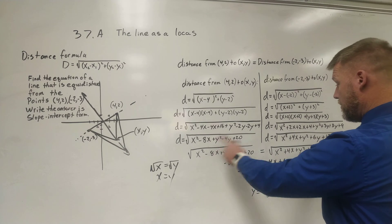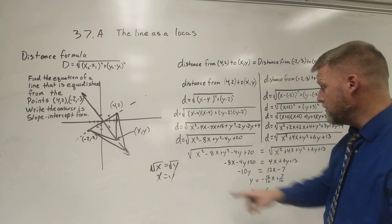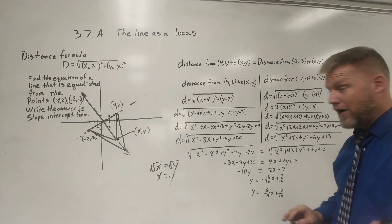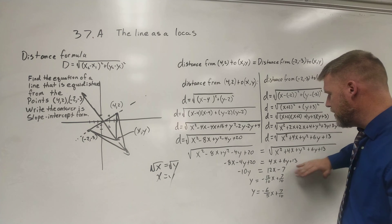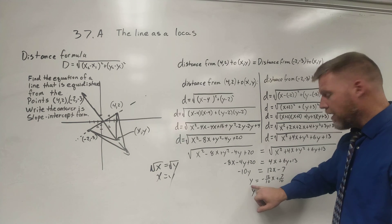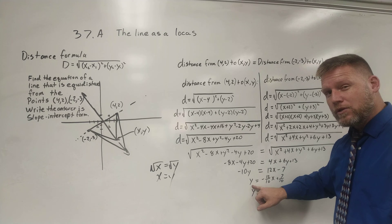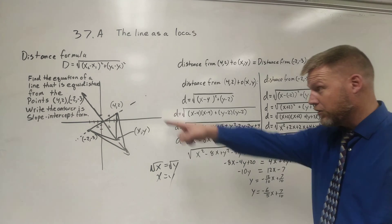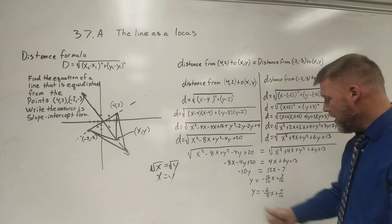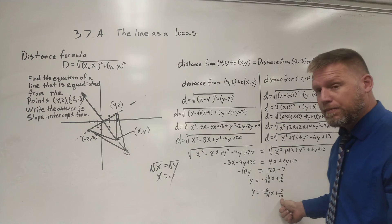We canceled the square roots by squaring both sides. We got rid of the x squareds by subtracting them. We got rid of the y squareds by subtracting them. Combined our like terms. We got y isolated onto the one side of the equation, which is my y-intercept form, y equals mx plus b. There's my y equals mx plus b right there.